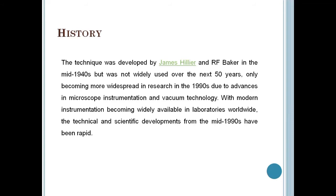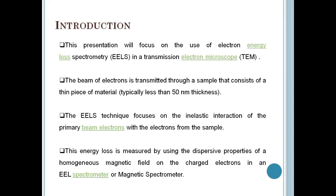This has enabled detailed measurements of the atomic and electronic properties of single columns of atoms and, in a few cases, of single atoms. This presentation will focus on the use of EELS in a TEM or STEM. In a TEM or STEM, a beam of electrons is accelerated to energies typically between 100 keV and 1 MeV. The beam is transmitted through a sample that consists of a thin piece of material, typically less than 50 nanometers in thickness.